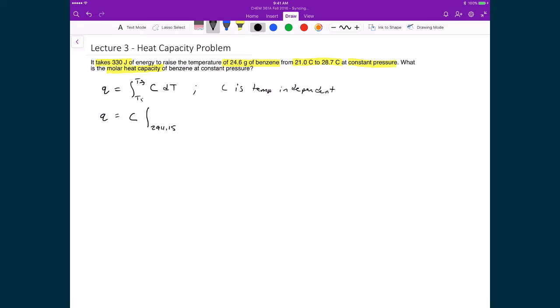294.15, and that's when I add 273.15 to 21 degrees Celsius. This is 301.85, and that's just when I do that conversion to Kelvin. This integral is straightforward. Since we've got the integral of dT, well, that's just going to be equal to T, and this is evaluated between 301.85 to 294.15.